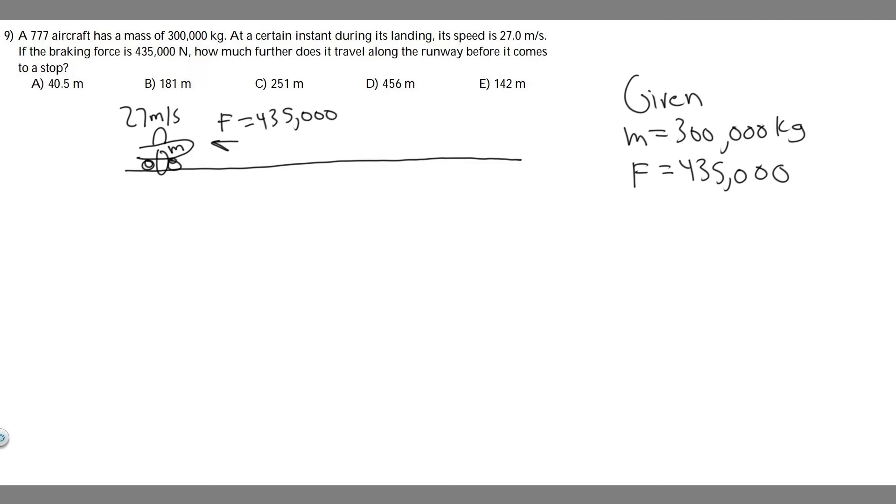So we know F, the force, is 435,000 newtons. And then it's going to travel along and slow down because we have a force acting in this direction. And then we know the plane here is going to be at 0 meters per second at some point. And we're trying to find basically how far it's going to travel.